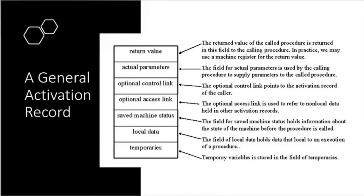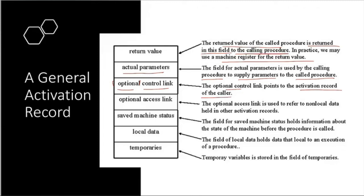The current execution path specifies the content of the stack, with the last activation record at the top. A general activation record contains: a return value field (where the called procedure's return value is written for the calling procedure — in practice a machine register may be used); actual parameters supplied by the calling procedure; and an optional control link pointing to the activation record of the caller.